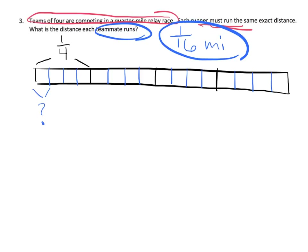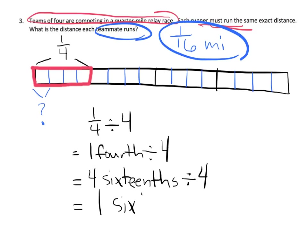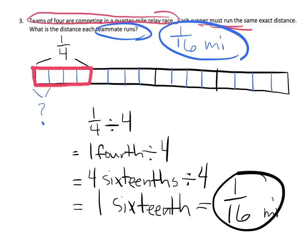If we want to see the mathematics: one-quarter divided by four, which is one-fourth divided by four. One-fourth is equal to four-sixteenths. Four-sixteenths divided by four is one-sixteenth. That's our answer — one-sixteenth of a mile. Technically we should multiply to check, but I'll leave that up to you. And that wraps up our lesson.